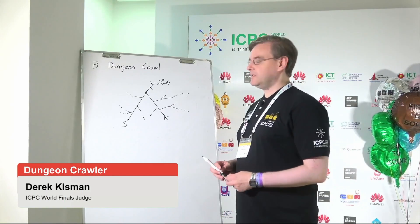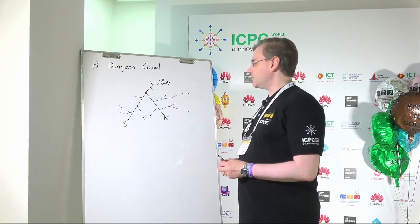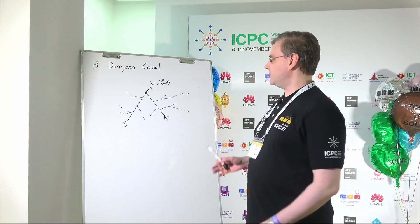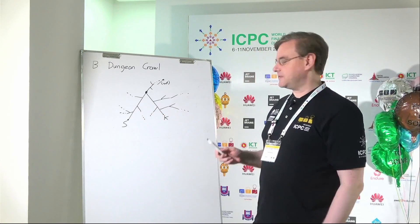All right, this is a solution for problem B, Dungeon Crawl. So the problem is that you are given a maze which looks like a tree. It does not have any cycles in it.